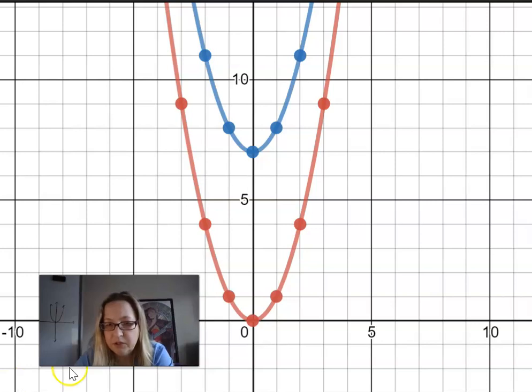So I'm going to first look at the vertex. The vertex of the red parabola here at 0, 0. The red parabola is the parent function, by the way.